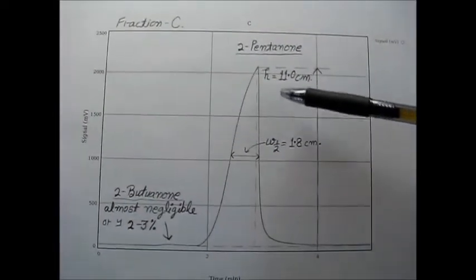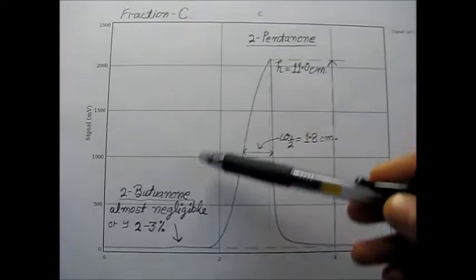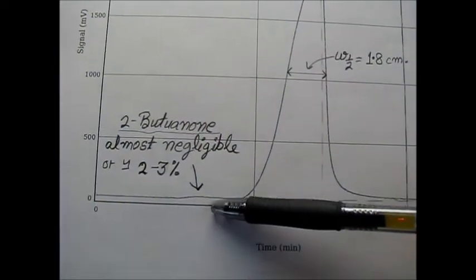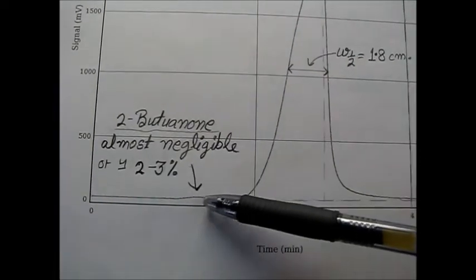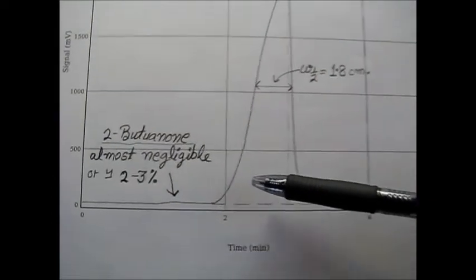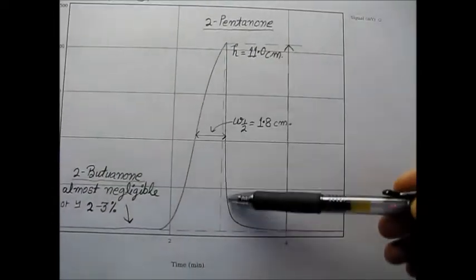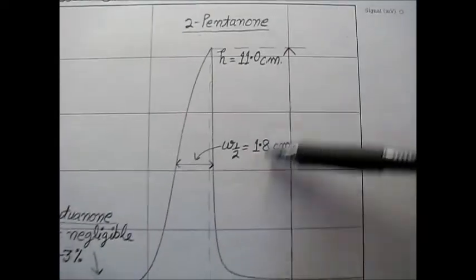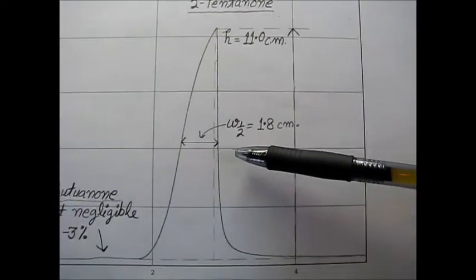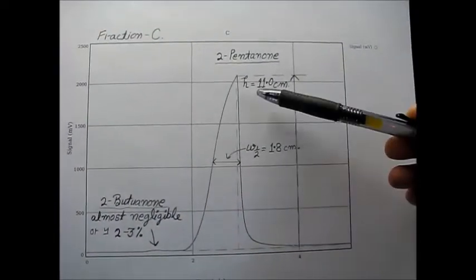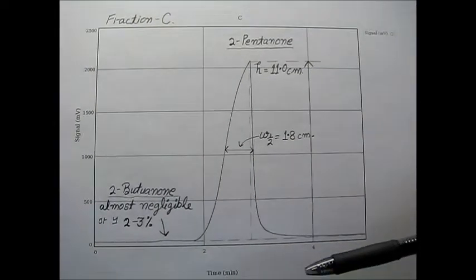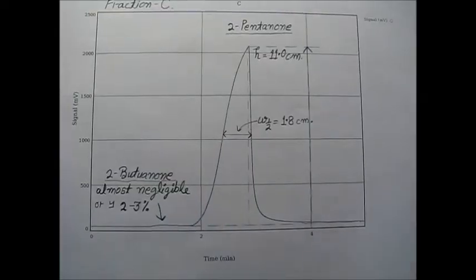So this is the B fraction, this was the A fraction and now the third fraction which is the fraction C. Here you can see butanone is very very tiny so it is kind of almost negligible to measure. So I will say approximately 2 to 3% otherwise mostly you are getting 2-pentanone and its height is 11 cm and half width is 1.8 cm. So this fraction have mostly 98% 2-pentanone but you need to find out the area of this peak as well.